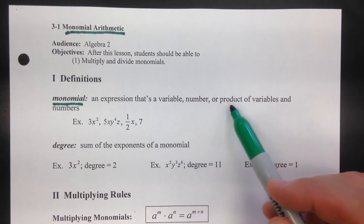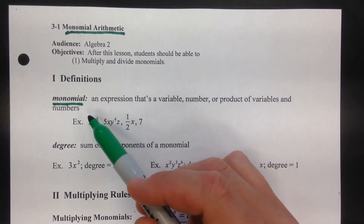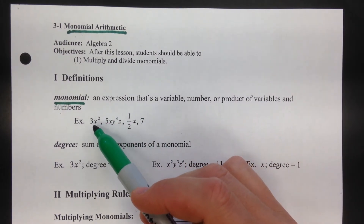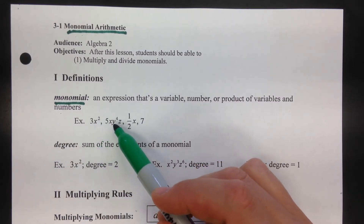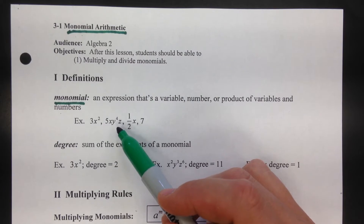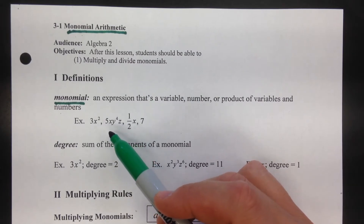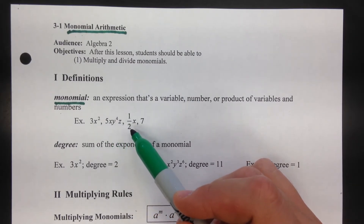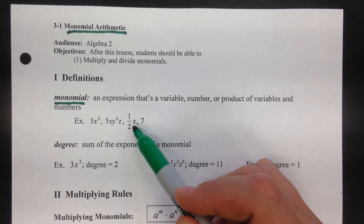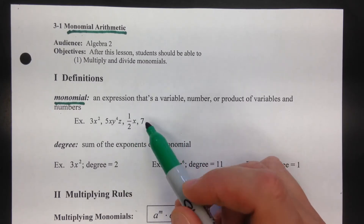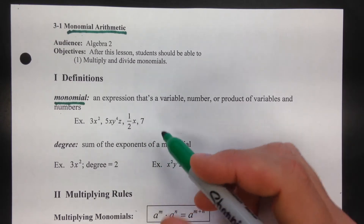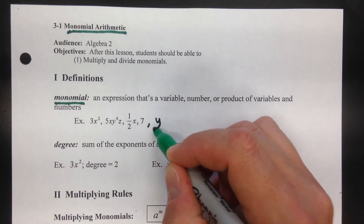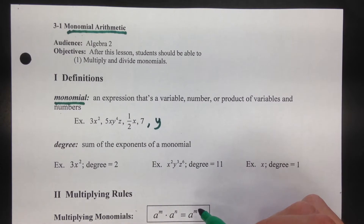A monomial is an expression that's a variable, number, or product of variables and numbers. For example, 3 times x squared is a monomial; 5xy to the fourth z is one term. Mono means one, so each of these is one term. It could be one half times x, a constant like seven, or just a variable like y — those are all examples of monomials.